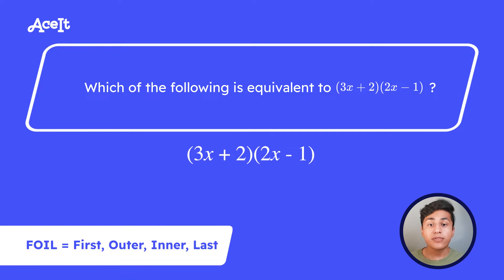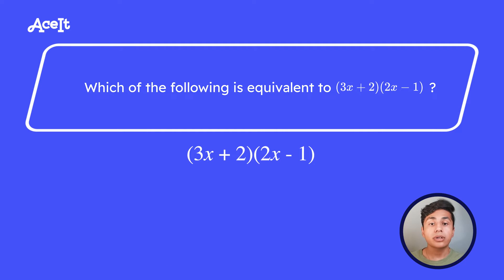So you're going to multiply the first number of each binomial together, followed by the outer two, the inner two, and then the last two. So if you multiply in this order, you're going to be left with 6x squared minus 3x plus 4x minus 2. And then simplifying it, we get 6x squared plus x minus 2.